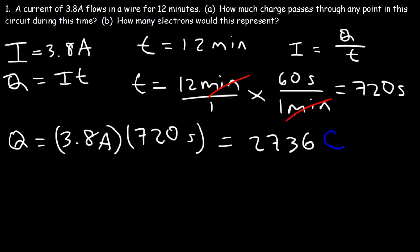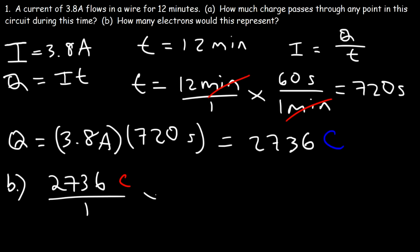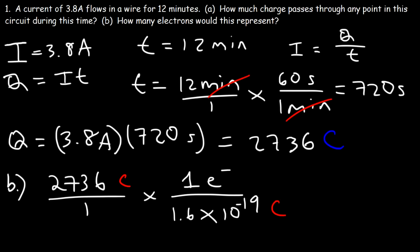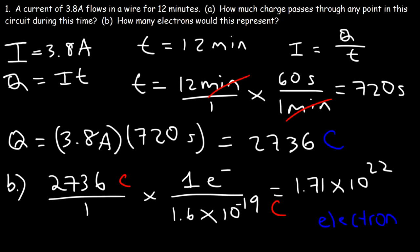Part B: How many electrons does this represent? Starting with 2,736 coulombs, since one electron has a charge of 1.6 times 10 to the negative 19 coulombs, we divide 2,736 by 1.6 times 10 to the negative 19. That gives approximately 1.71 times 10 to the 22 electrons. The amount of charge is proportional to the number of electrons.